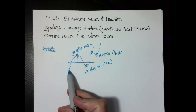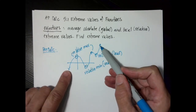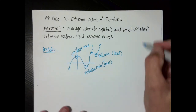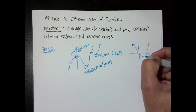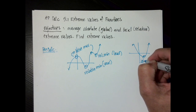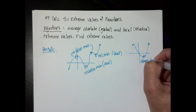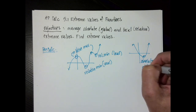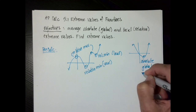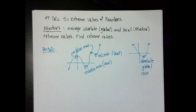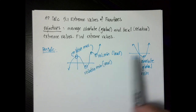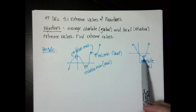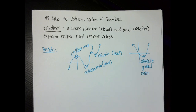This particular function doesn't have a global or absolute extremum because it continues forever down and forever up. On the other hand, if I had a parabola, this minimum value would be an absolute or global minimum — depending on the book you're using. So we have to consider what's happening in a local area as opposed to what's happening for the whole function.